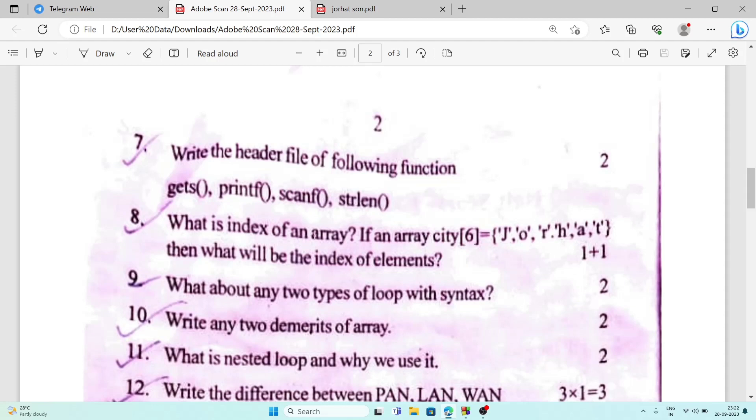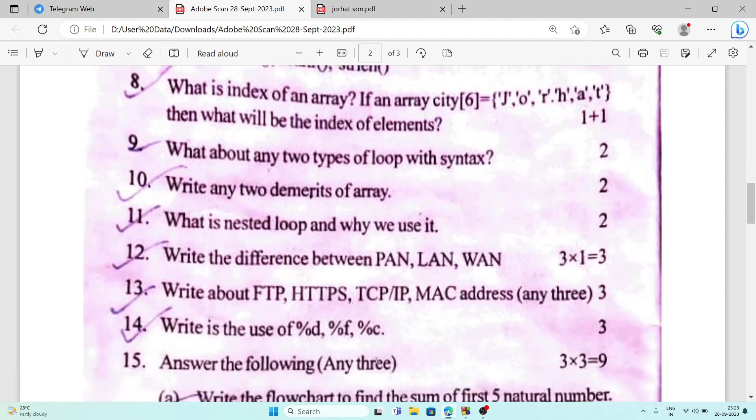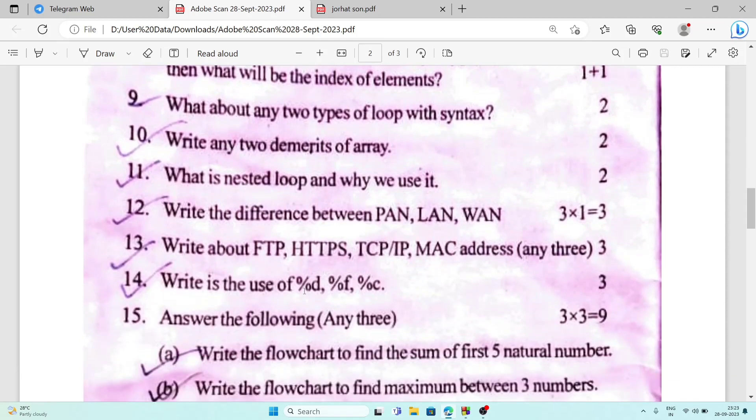Question number eight asks what will be the index of the elements. This is not justified. They have to ask what will be the index of the first element or the third element or the last element. That part is also missing.